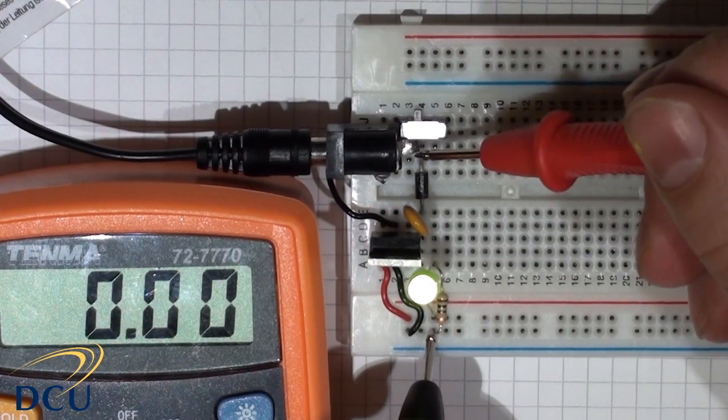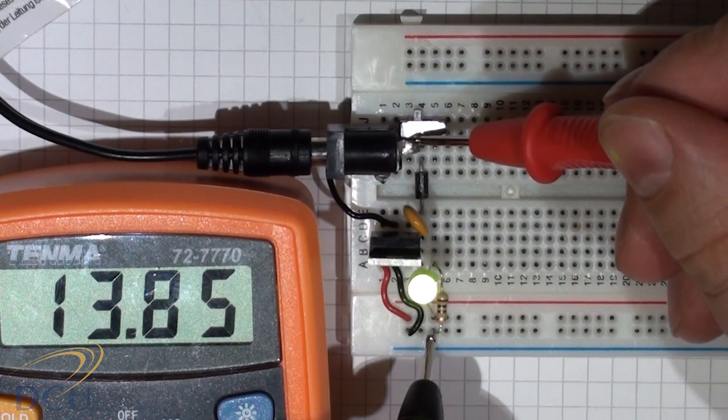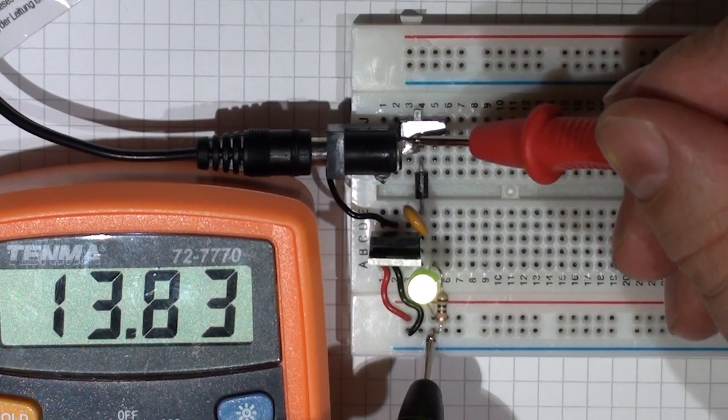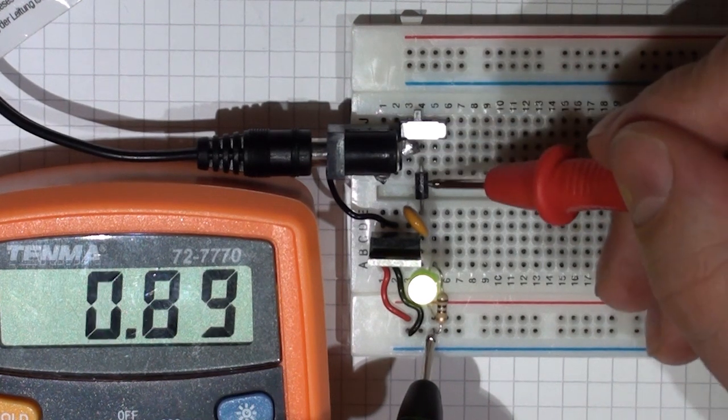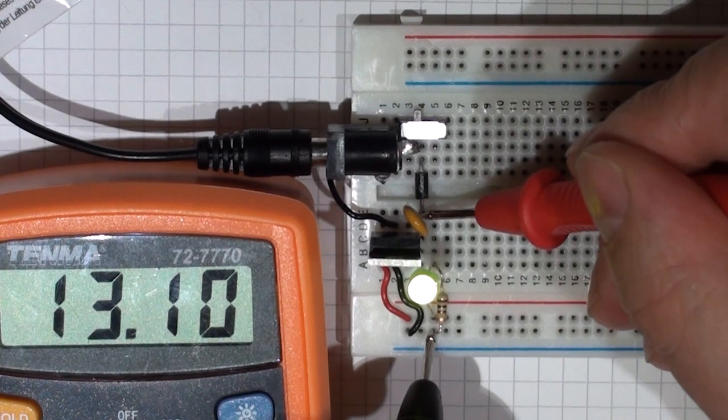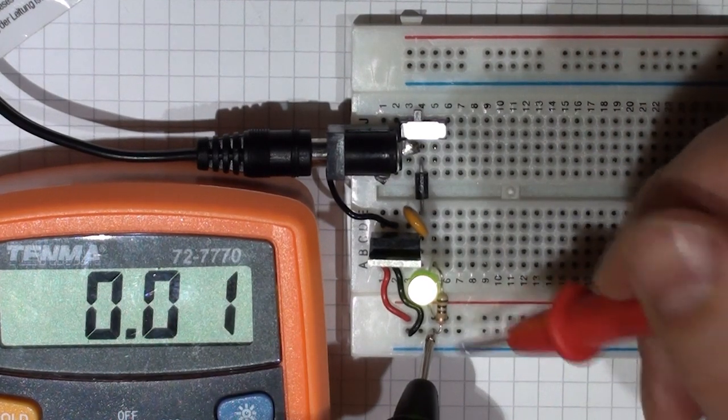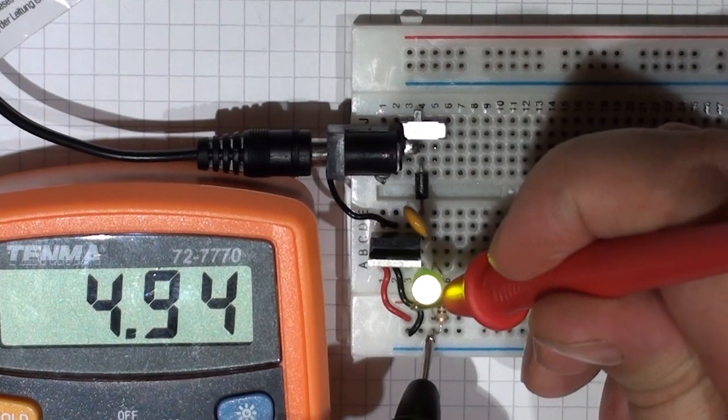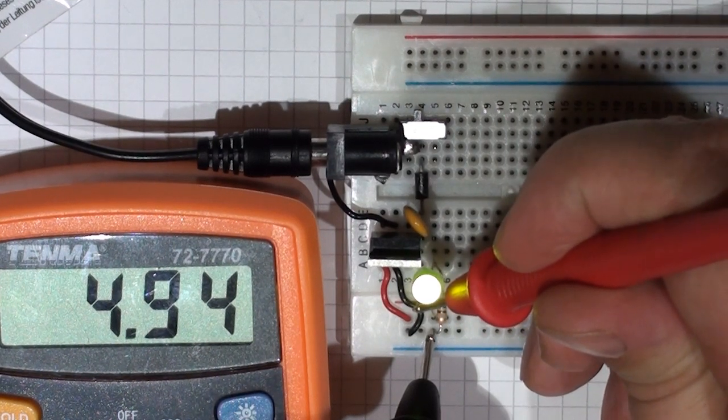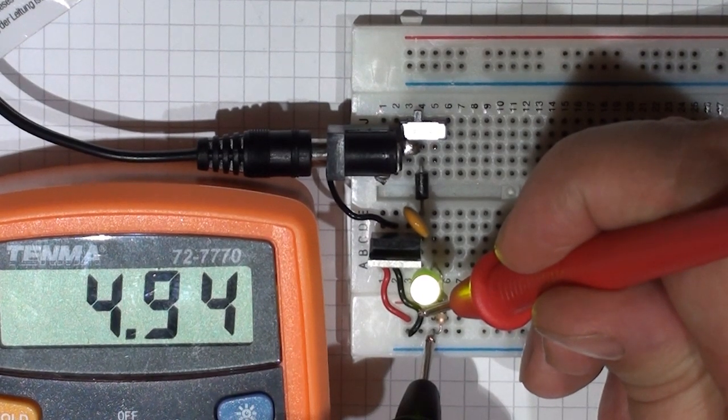We're just going to check the voltages now across our circuit. The 9 volt power supply is giving us 13.83 volts on our input. If we look at the other side of the diode you'll notice it's slightly lower at 13.12 volts, and that's one of the features of a rectifier diode, there will be a voltage drop across it. In this case it's 0.71 volts. The output from our regulator is 4.94 volts and everything looks very good at this stage.